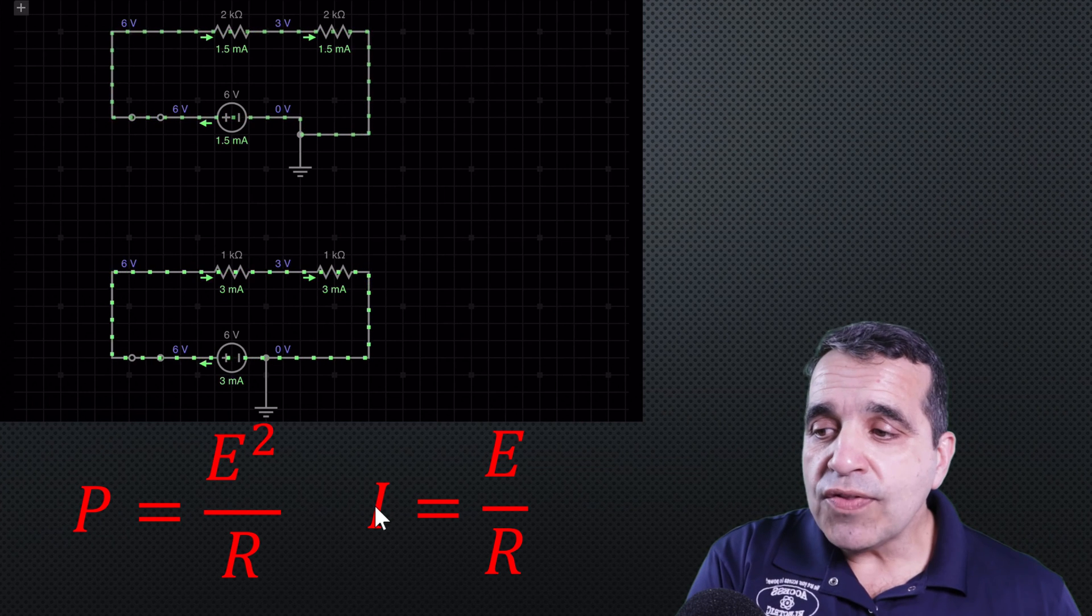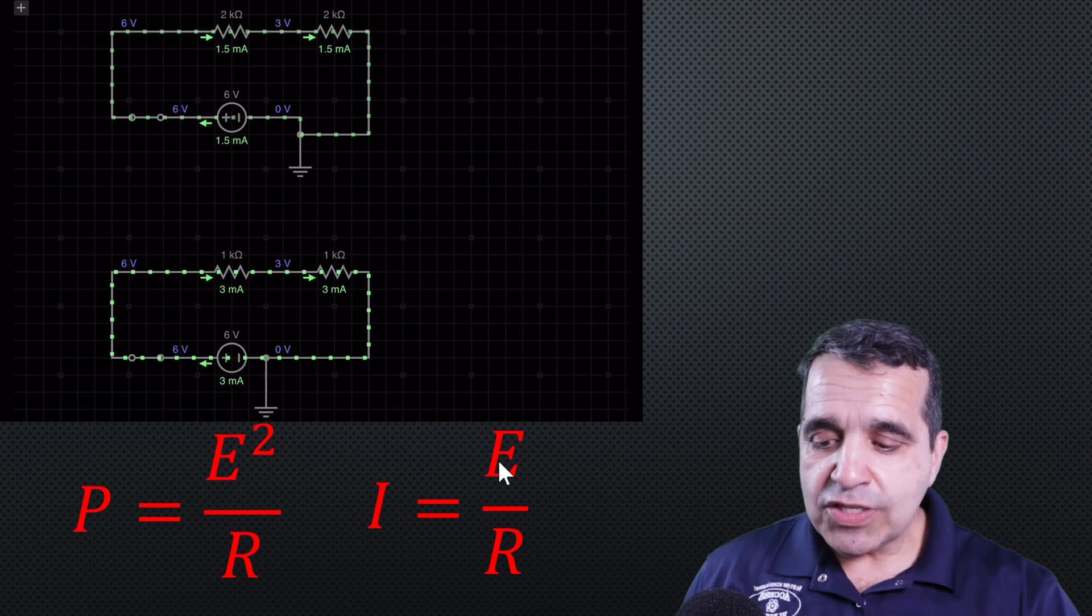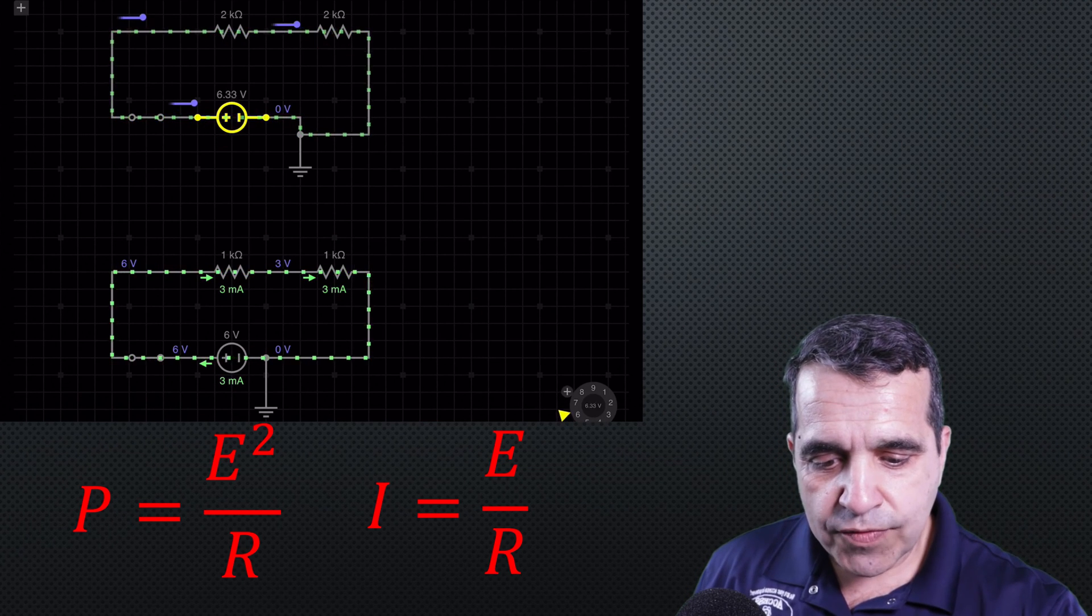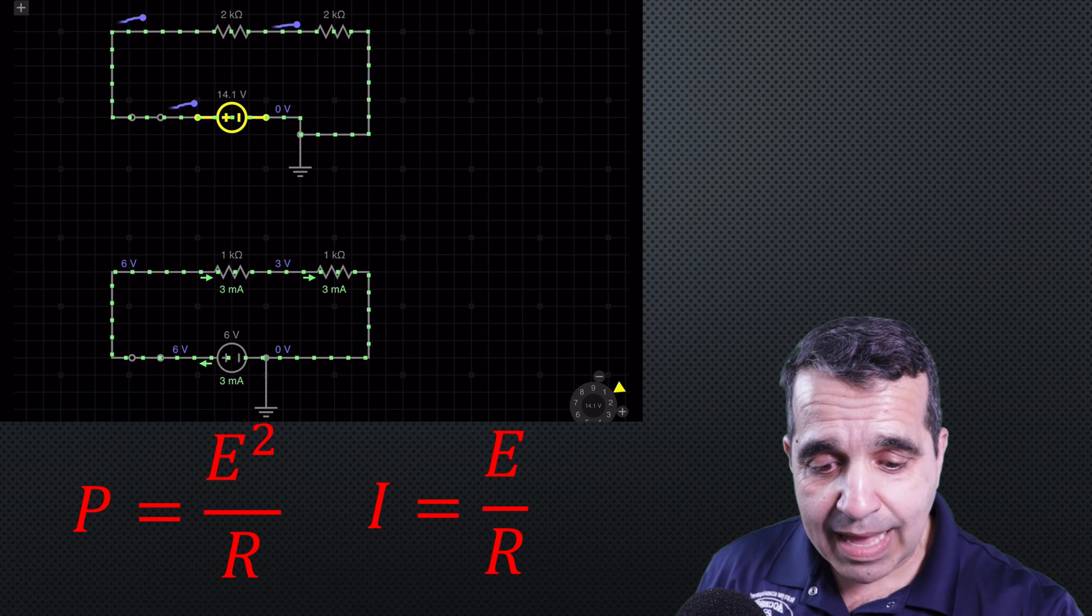Now, amperage is also directly proportional to the voltage. So if I took my top circuit here and I took my voltage source and I double it. So if you notice right now, I had 1.5 milliamps of current.